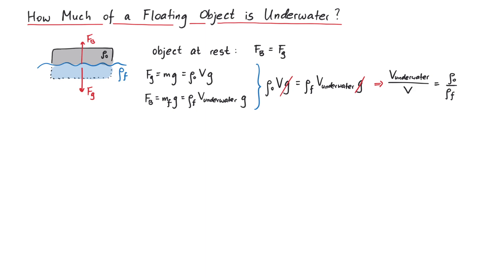Let's look at some examples to see this equation in action. First, consider a block of wood floating in water. The object density rho O is approximately 600 kg per cubic meter, and the fluid density rho F is around 1000 kg per cubic meter.